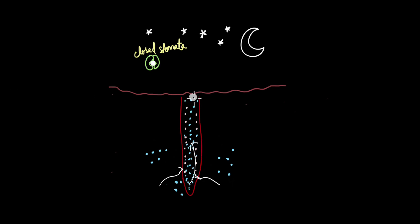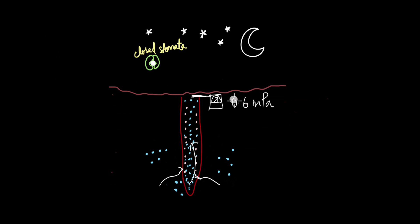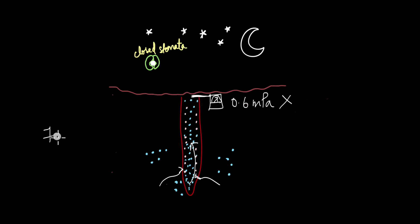If you were to measure the root pressure, you would do so just below the soil at the tip of the root. Using a pressure-measuring device, it would read around 0.6 megapascals for almost all plants. However, root pressure alone is not enough for plants to transport water and nutrients throughout; the maximum distance root pressure can push water up is around 7 meters.